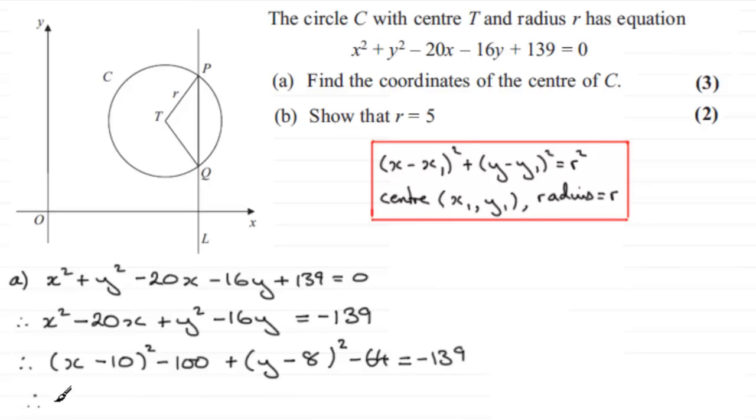So if we clean this up, we've got (x - 10)² plus (y - 8)². And then here we've got -100 - 64, so that's -164. And we add that to the other side. So we've got -139 + 164. So what that means now is that we can just tidy this up to give us (x - 10)² + (y - 8)² = 25, because -139 + 164 gives us 25.